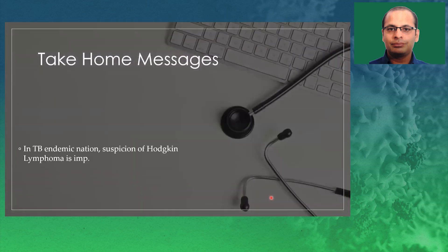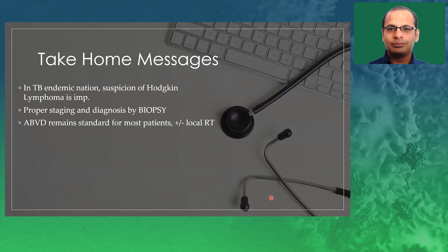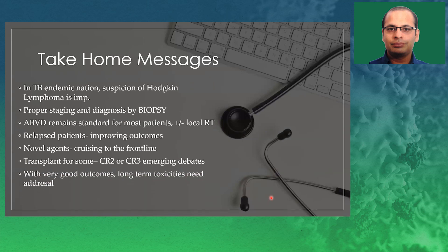To summarize: In a TB-endemic setting, suspicion of Hodgkin lymphoma in persistent lymphadenopathy is important. Diagnosis is by biopsy. Proper staging is required, preferably by PET scan or at least CT scan. ABVD remains the standard for most patients, plus/minus local RT depending on the trial used. Relapsed patients now have improving outcomes, especially with newer agents — brentuximab and checkpoint inhibitors — now available in Indian markets. Newer agents first used in relapsed/refractory settings are now moving to frontline. Transplant for some patients in CR2 or CMR3 remains relevant, with emerging debates. With very good outcomes, long-term toxicity requires addressing.